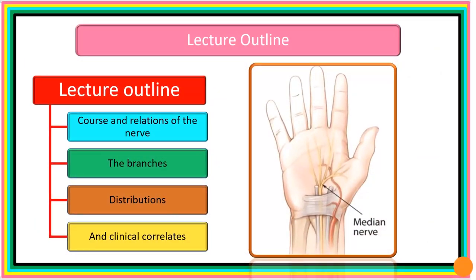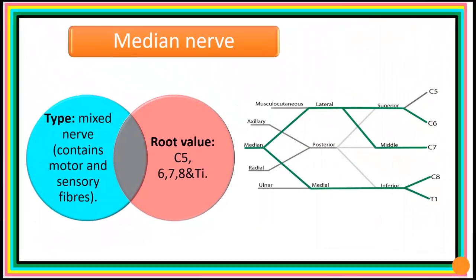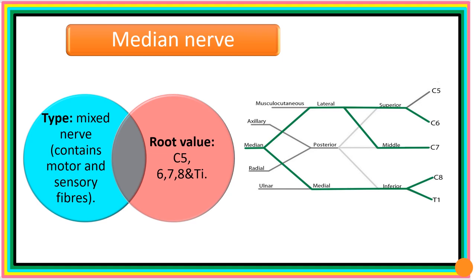In the course of this lecture, we will look at the course and relations of the median nerve and the branches at various regions. We will look at the distributions and discuss the clinical correlates. We are going to start from where this nerve originates. This nerve has both a motor component and a sensory component — meaning it will supply muscles and also supply the skin.